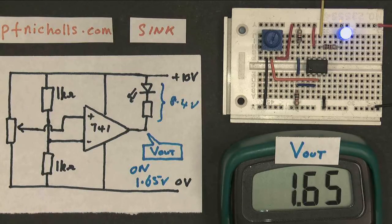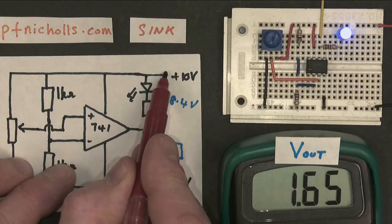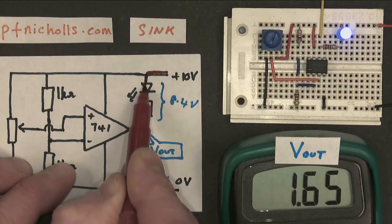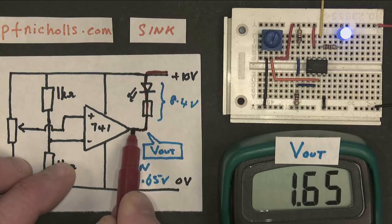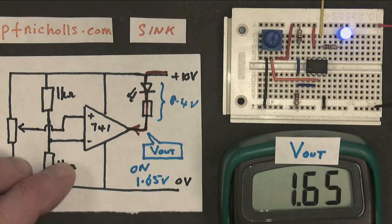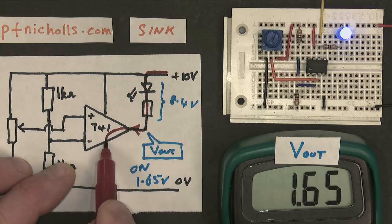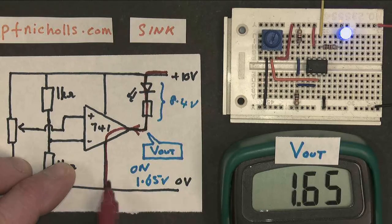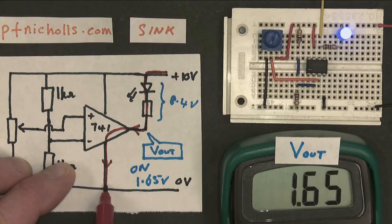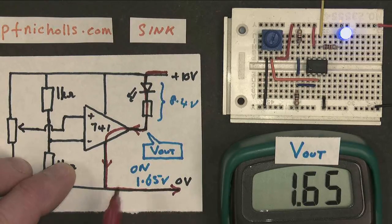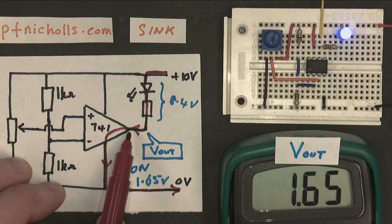But the question is, where does the current go? Well, the current still comes from the power supply. The power supply is still the current source. It flows through the LED, making it light up through the resistor into the output of the op-amp, through the op-amp's internal electronics, down through the power supply connection of the op-amp to the 0-volt rail and back along this way to the power supply. So here, this pin on the op-amp is acting like a current sink. It's allowing current to flow in.